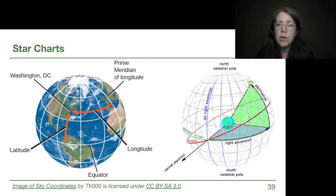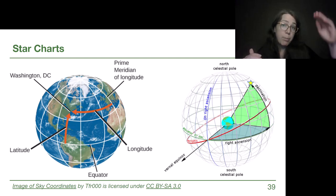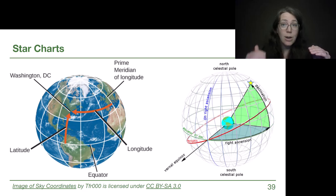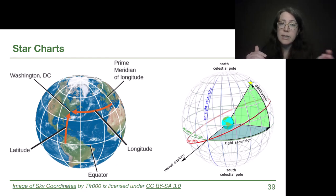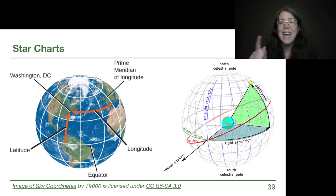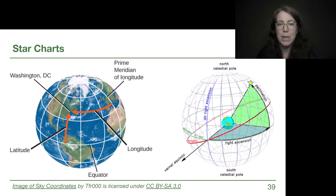Let's make sure we have a sense of those two new terms. On Earth, up and down is latitude, measured in degrees. On the sky, up and down is declination, measured in degrees. On Earth, left and right is longitude, measured in degrees — or time zones. On the sky, left and right is right ascension, measured in hours.